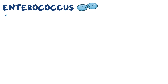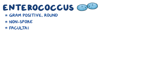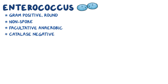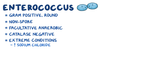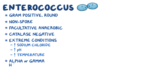As a quick recap: Enterococcus is a gram-positive round bacteria, non-spore forming, facultative anaerobic, and catalase-negative. It can survive in extreme conditions like high sodium chloride concentration, high pH, and extreme temperatures. It can have alpha or gamma hemolysis on blood agar, and it can grow on bile salts.